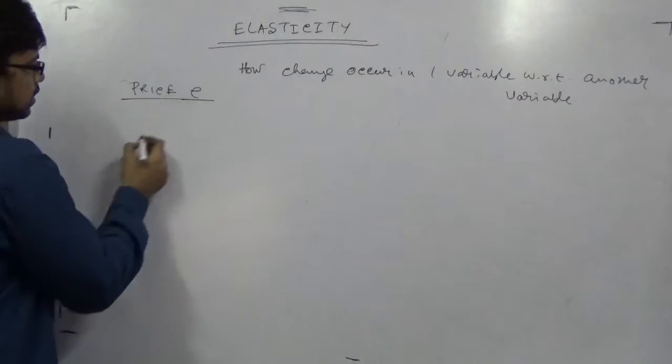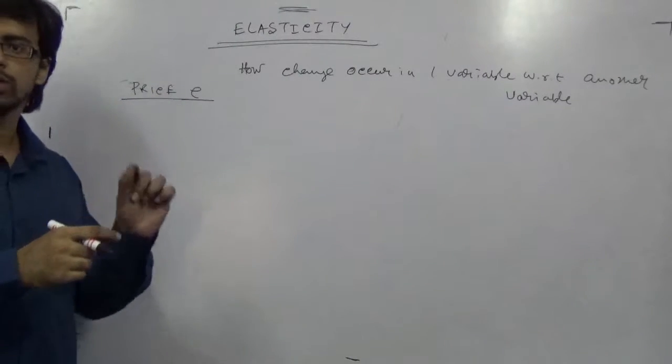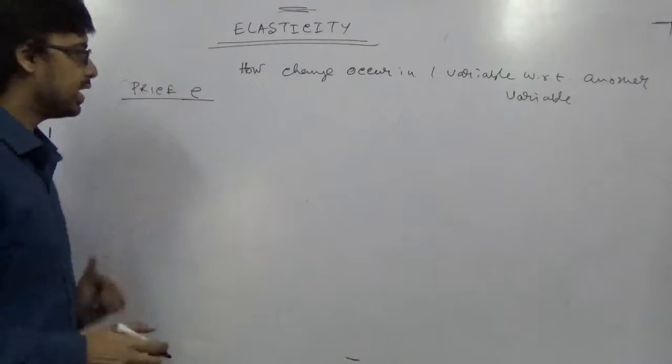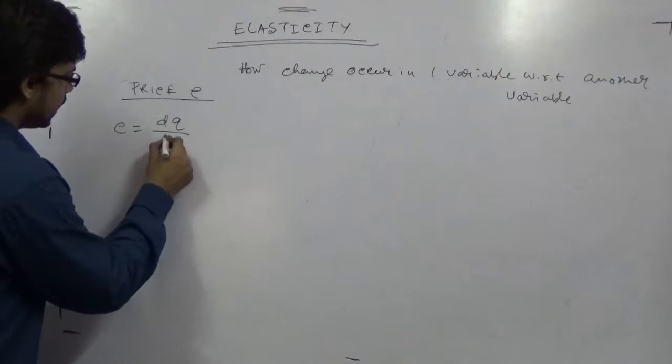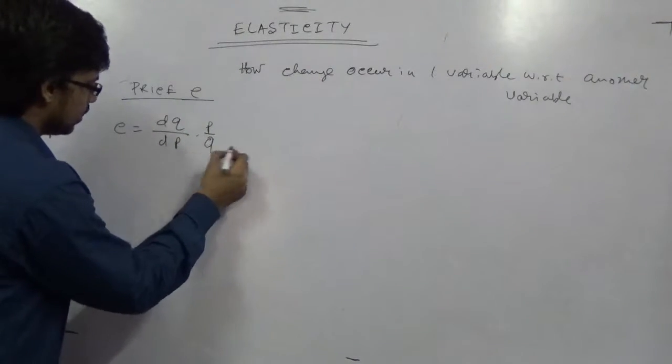Price elasticity means how price changes and your demand changes. So that is expressed in this way: E equal to dq by dp into p by q.